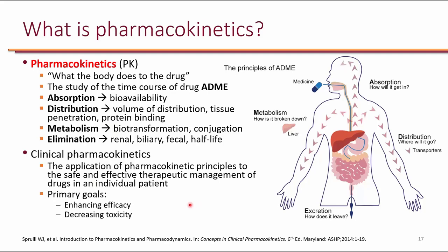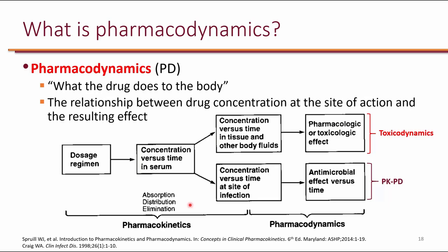Pharmacodynamics is what the drug does to the body—in the case of antimicrobials, the body refers to the pathogen. Once a drug is given to a patient, there is absorption, distribution, and elimination (pharmacokinetic properties), leading to concentration in body fluids and at the site of infection. At the site of infection, the drug acts on pathogens, producing pharmacodynamic outcomes—referred to as PKPD. Antibiotics also have effects on the human body itself, referred to as toxicodynamics.